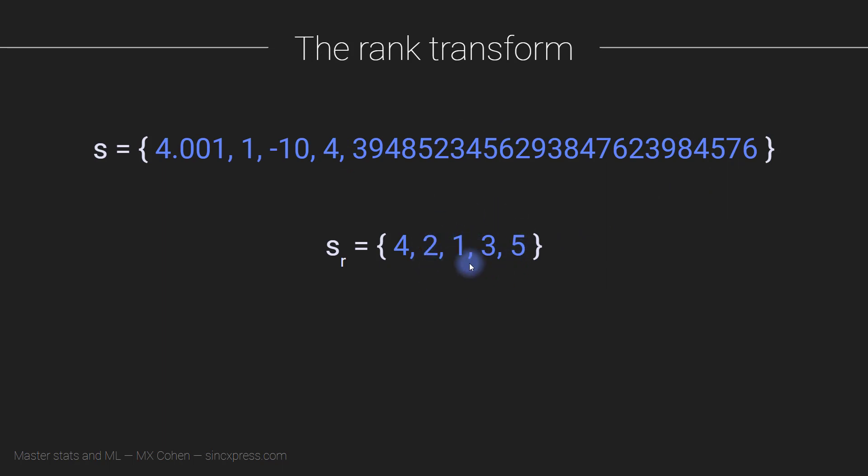Well, the way that the rank transform works is you sort all of the numbers in your original set according to their relative positions on the number line. You have the negative numbers all the way to the left and the positive large numbers all the way to the right. Then you number the numbers according to their relative position. So minus 10 is the furthest number to the left on the number line—it is the most negative number—so it gets a position of 1, an ordinal position of 1.